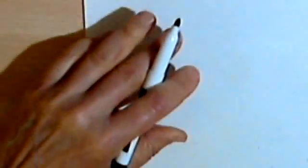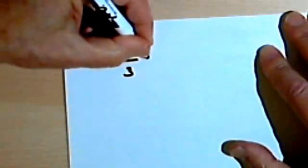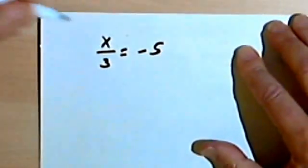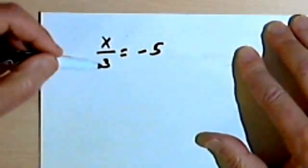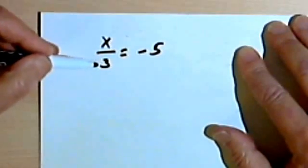Let's look at this one. Let's say I've got x divided by 3 equals negative 5. And once again, I want to isolate that x. I want to get it by itself. So since I had the x being divided, the way to undo division would be to multiply.